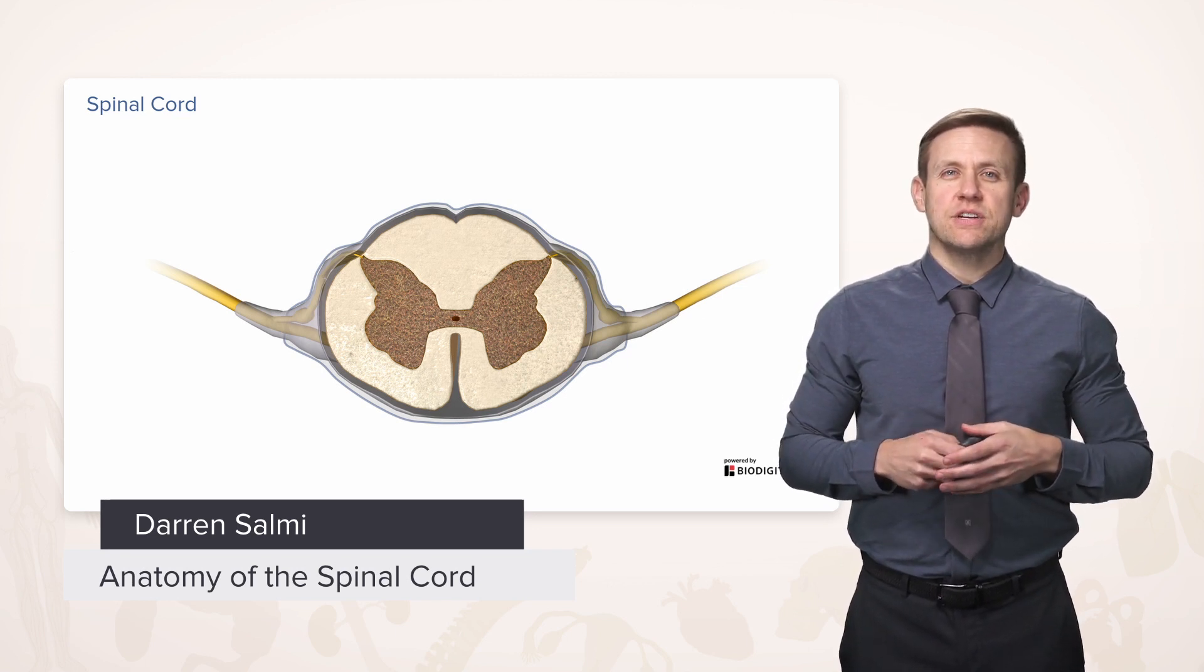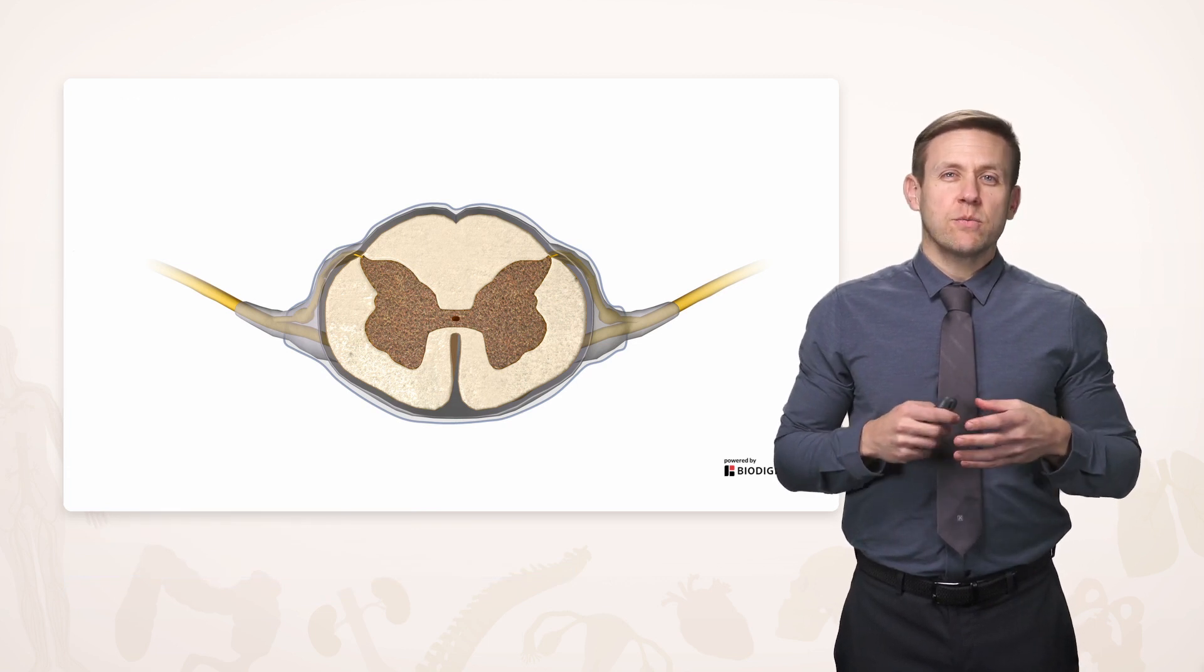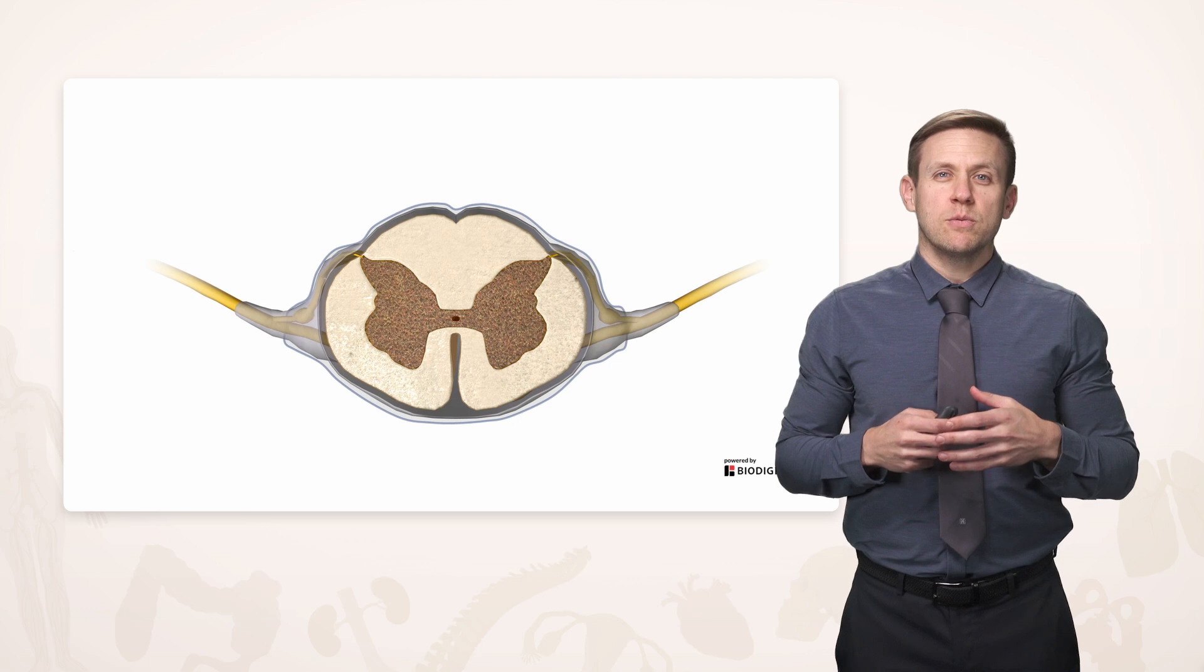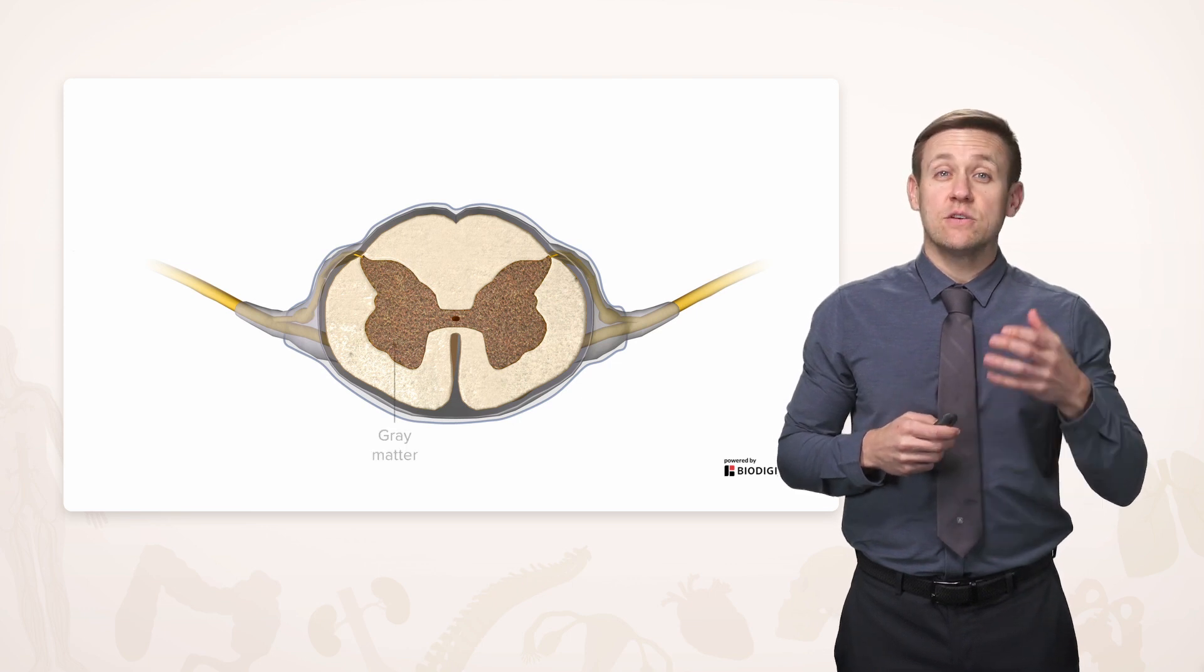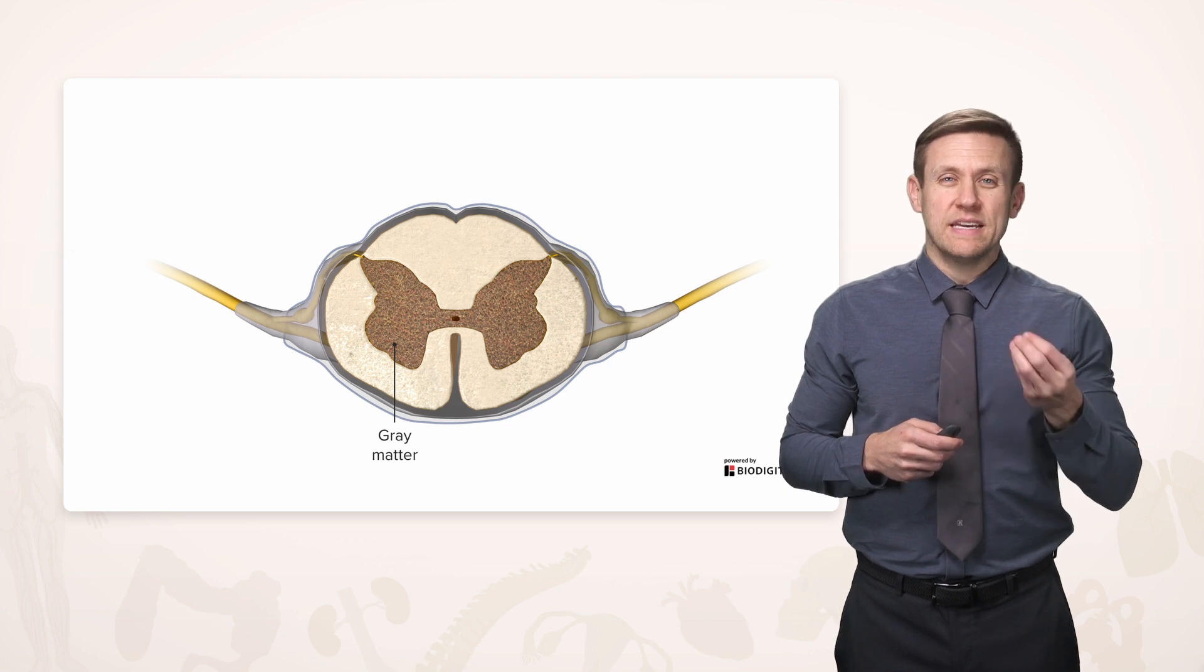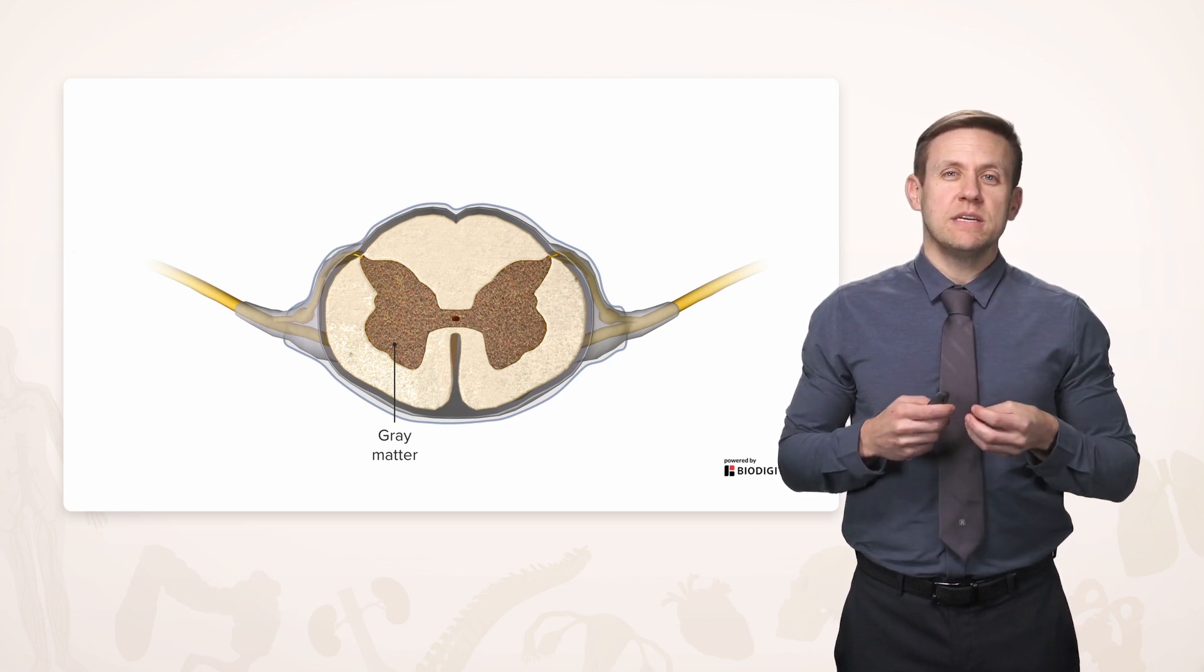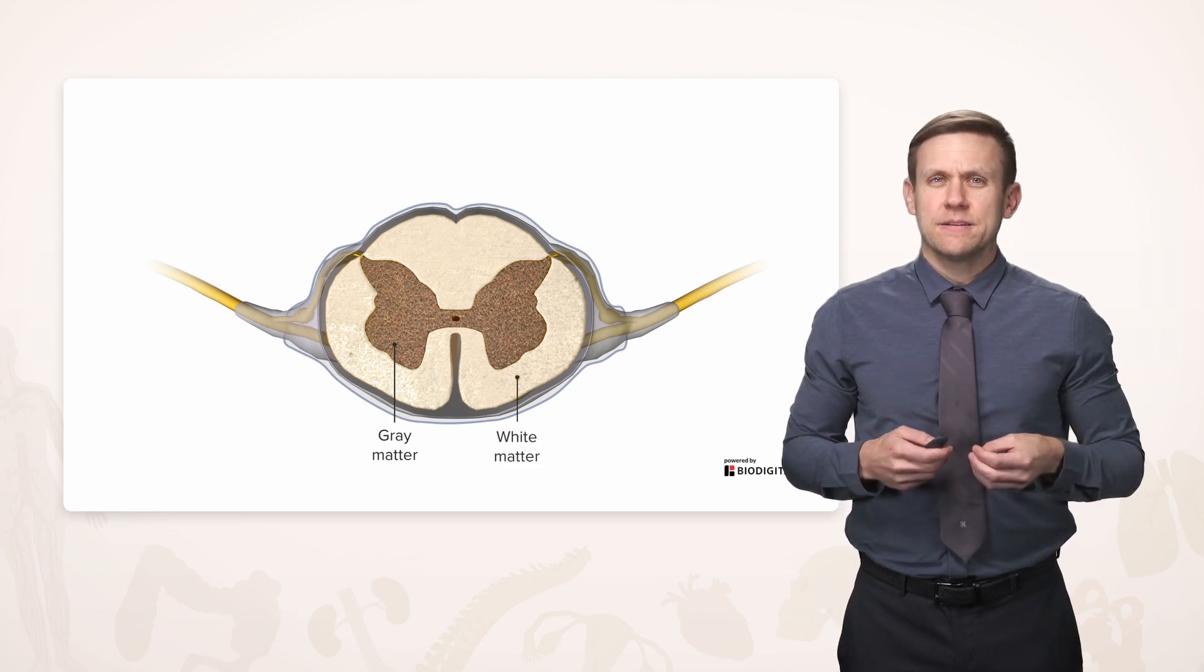Here we have a typical cross-section of the spinal cord. The arrangement of gray and white matter is somewhat the opposite of what we see in the brain, in that the gray matter of the spinal cord tends to be more deep or inside, and the outside portion is going to be mostly the white matter.